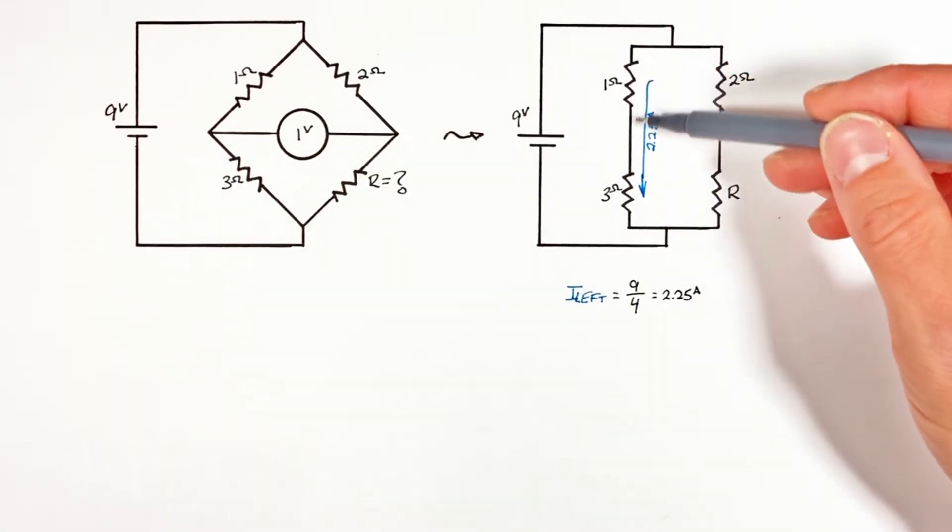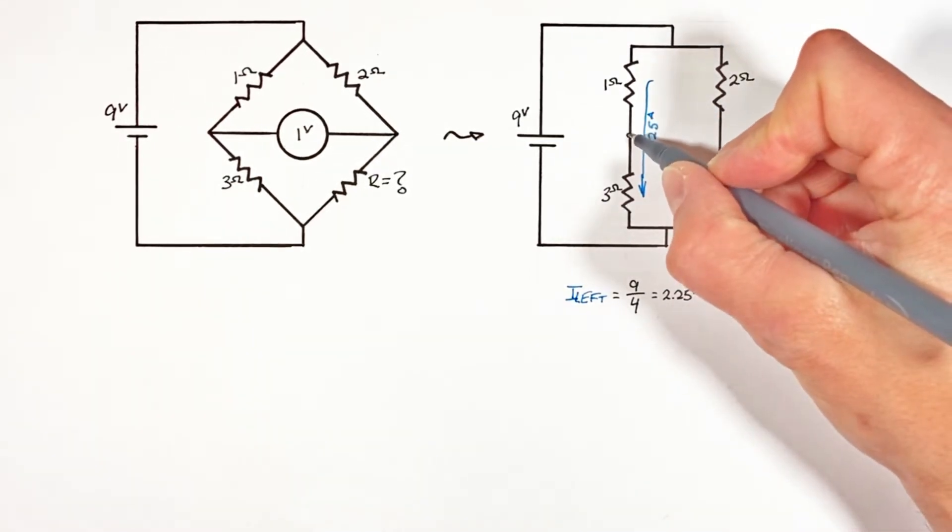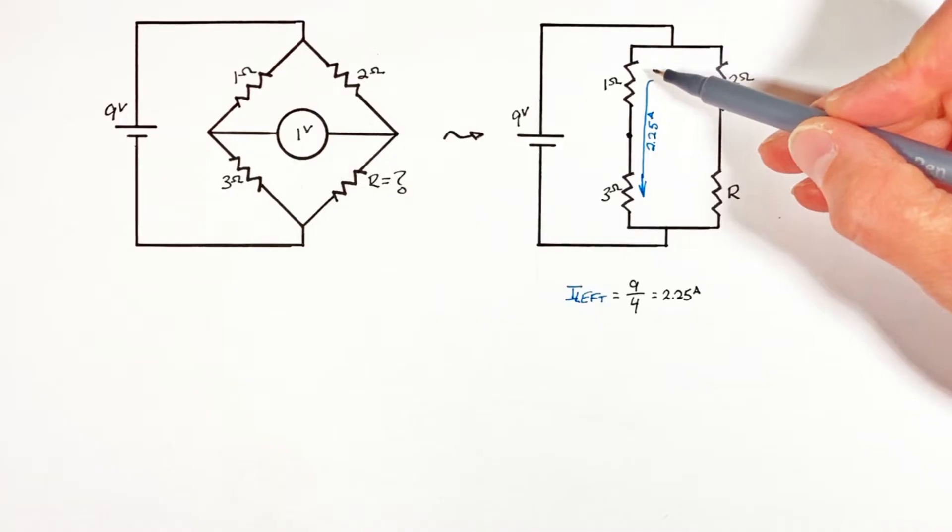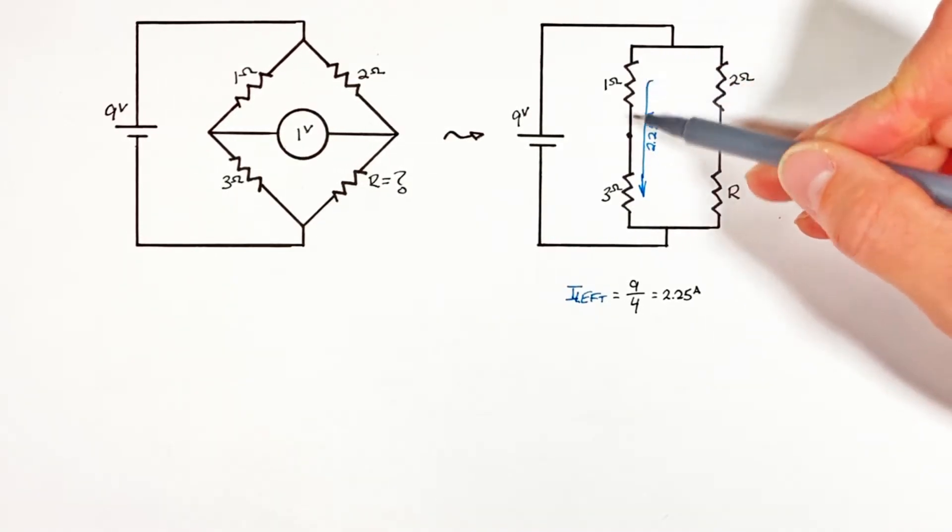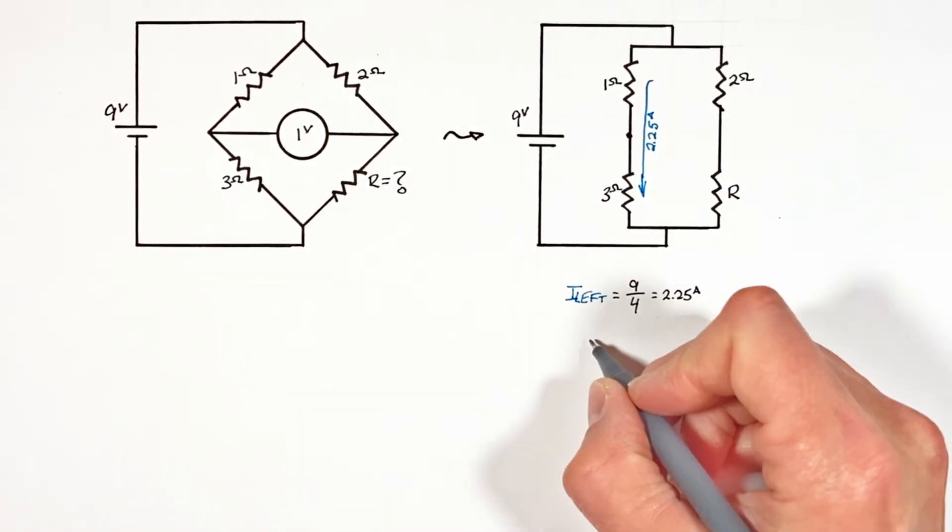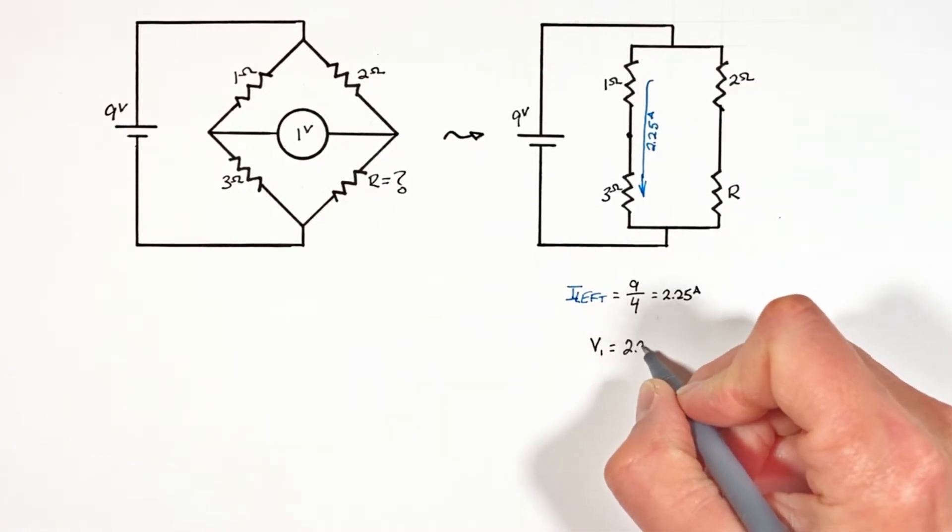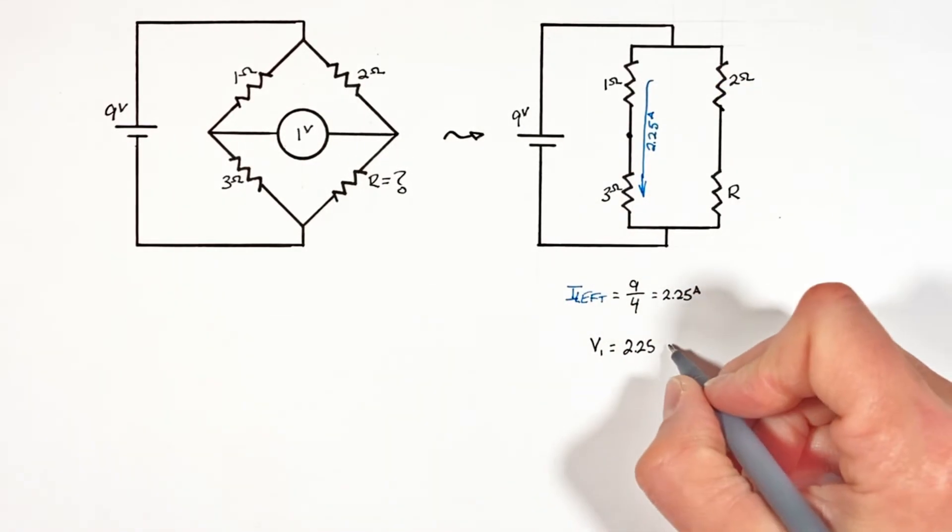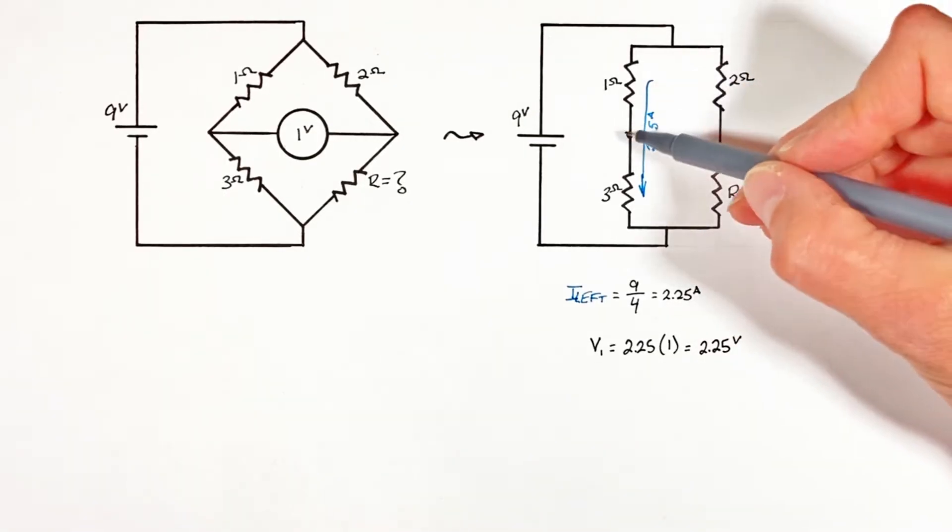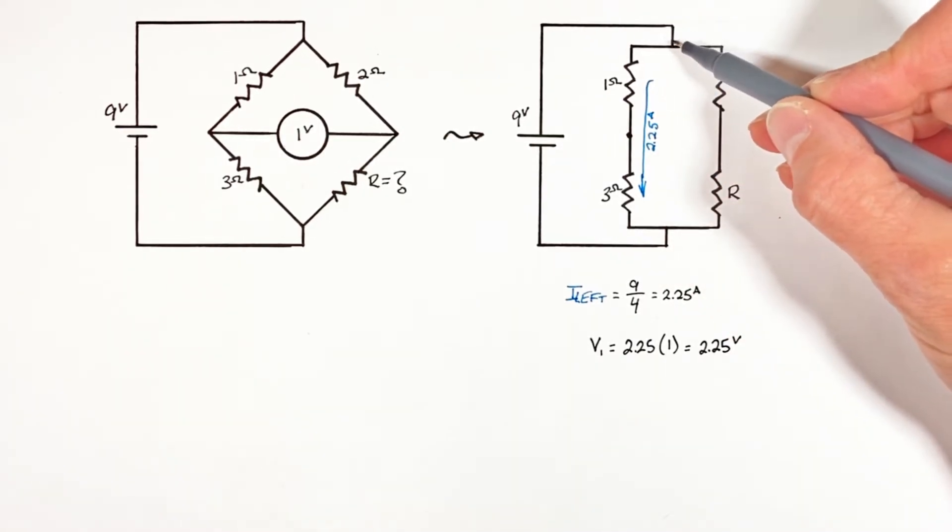And now that we have that current through the left side of the bridge we can solve for the potential at this point right here in our circuit. See knowing there's 2.25 amps passing through this one ohm resistor right here we know the voltage across the one ohm resistor according to Ohm's law is going to be the current that's 2.25 amps multiplied by the resistance that's one, which means this point right here is two and a quarter volts lower than the potential at this point.